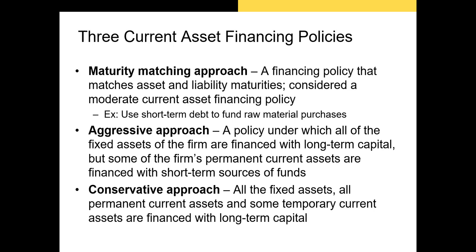There are three major current asset financing policies. The first is the maturity matching approach, where the financing policy matches asset and liability maturities. This is typically considered a moderate current asset financing policy. For example, a firm could use short-term debt maturing in 60 days to fund raw material purchases expected to be paid by customers within 60 days, and use debt with a 10-year maturity to fund equipment expected to last 10 years — matching the maturity of assets with the maturity of liabilities.